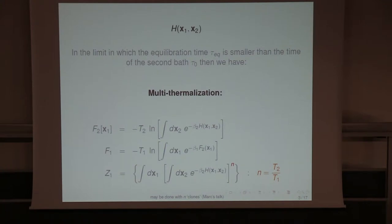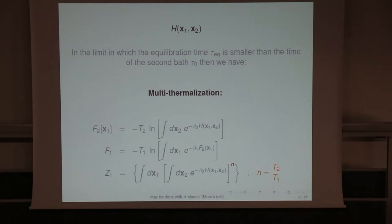Two comments about this. First of all, there are not many out-of-equilibrium measures around in the market — actually there are none as far as I know. This one is one. It's an out-of-equilibrium situation which is very peculiar, but it gives you a formula that is a generalization of the Gibbs formula. Second, N — you can easily see — is T2 over T1, which is arbitrary.